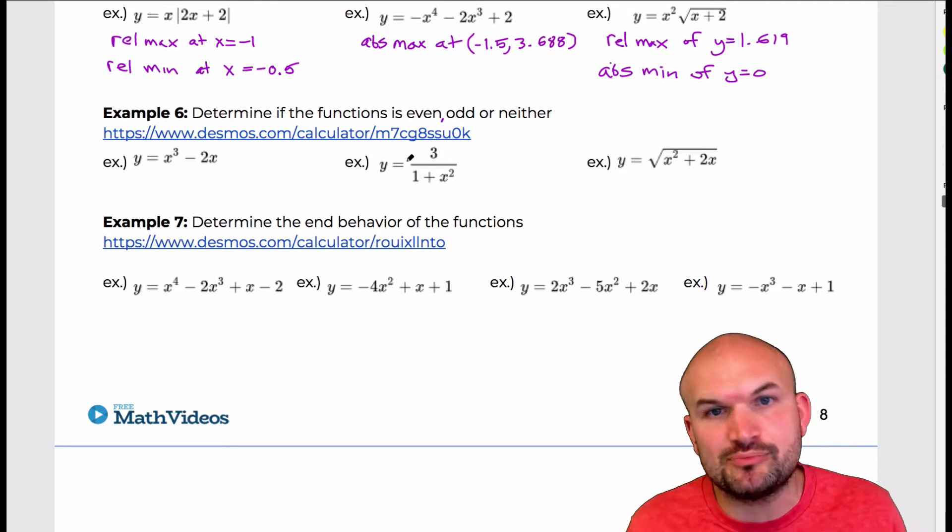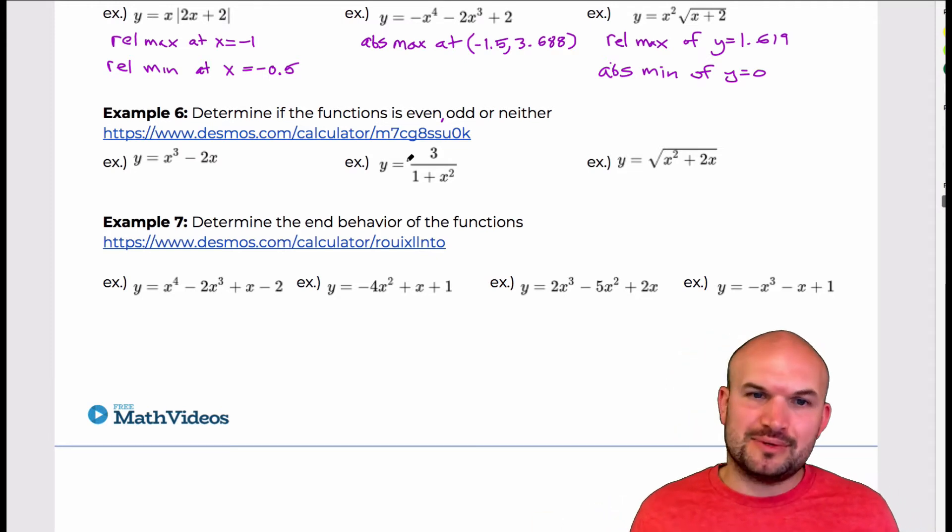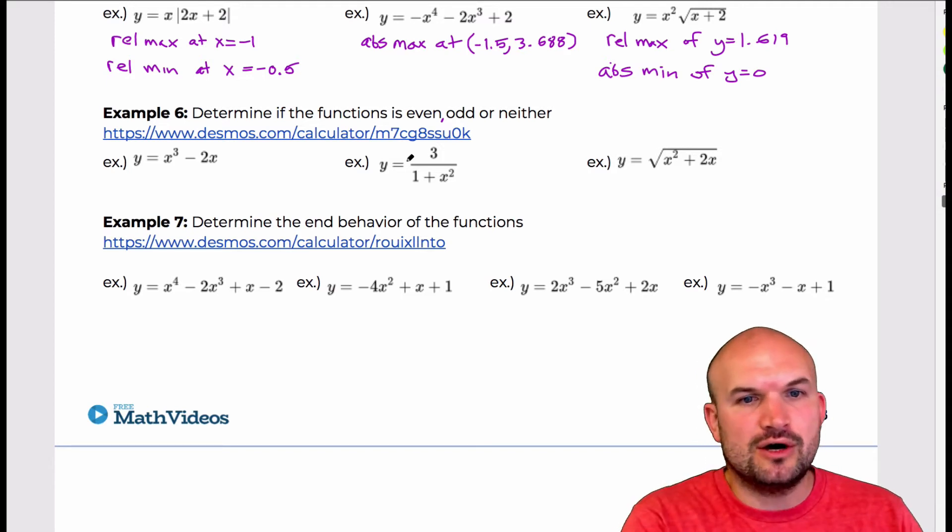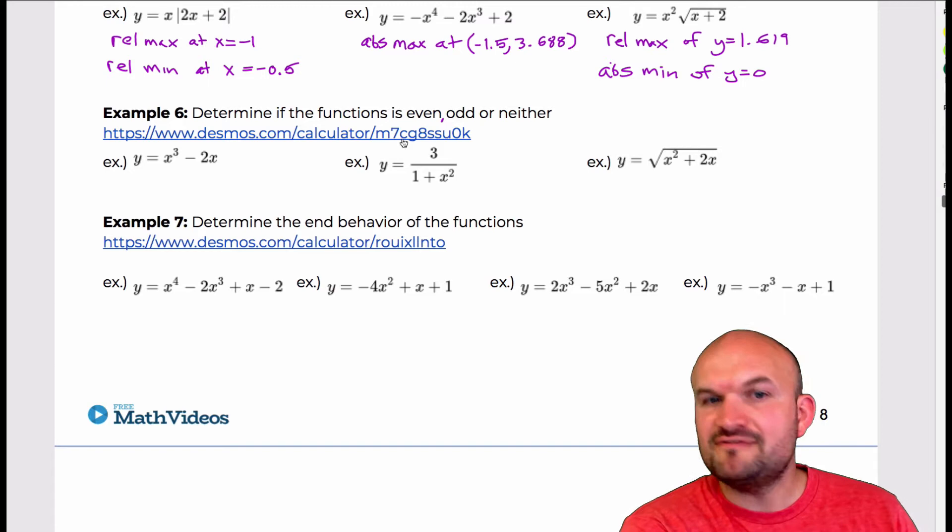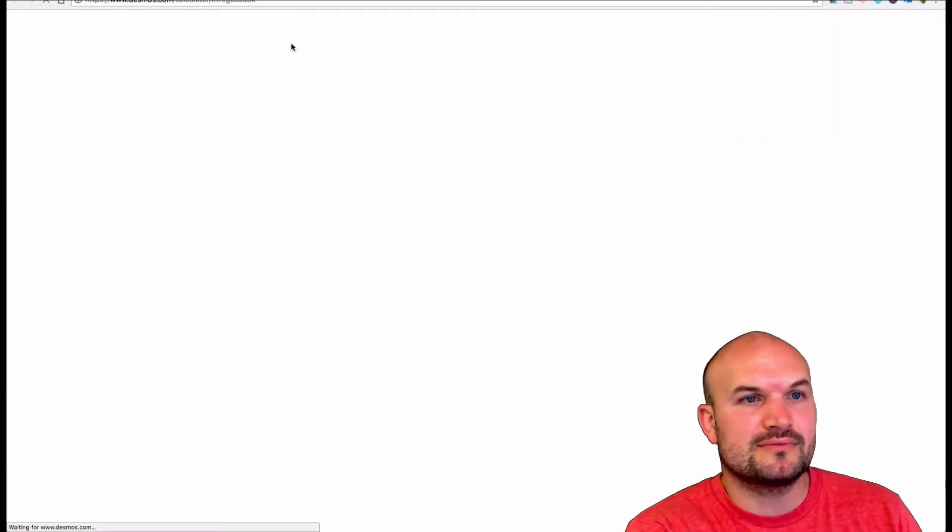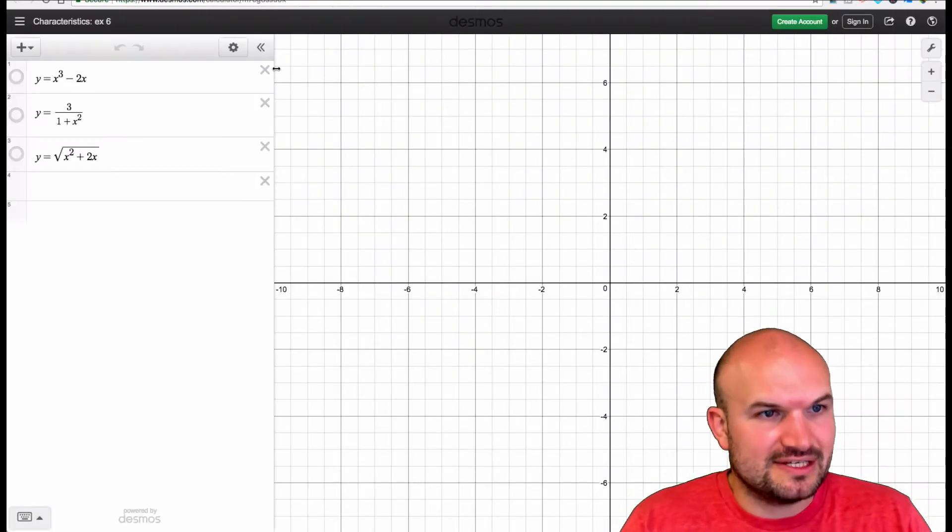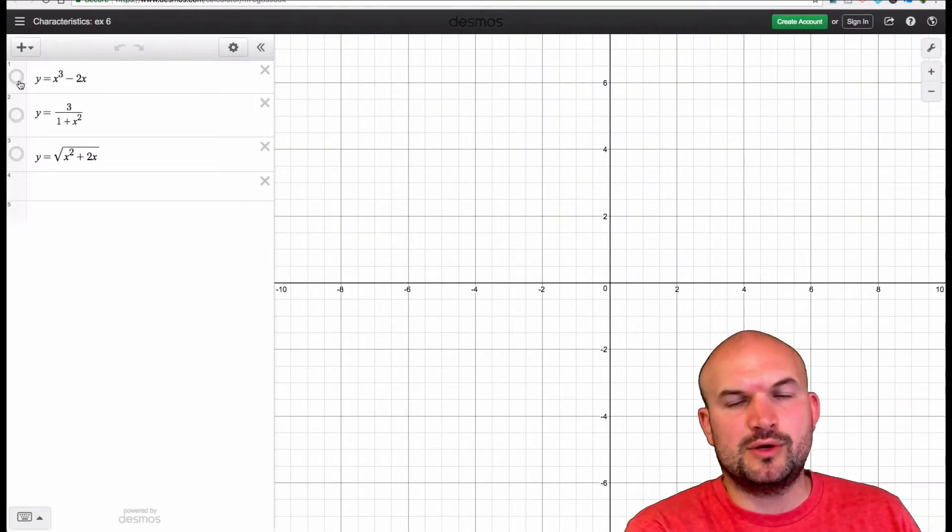Now, there is a great algebraic technique to doing this, but we're going to cover that later. So right now, we just want to look at the graph and identify the symmetry. I created a link here for you to follow on those graphs, or you could just type them into your calculator as well. Let's take a look at these graphs and see what type of symmetry we're working with.